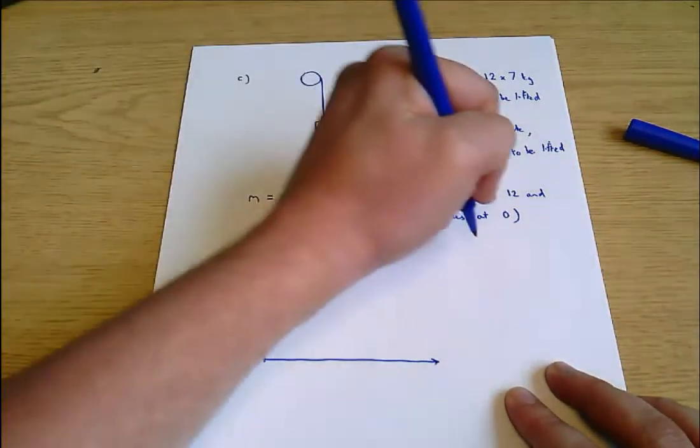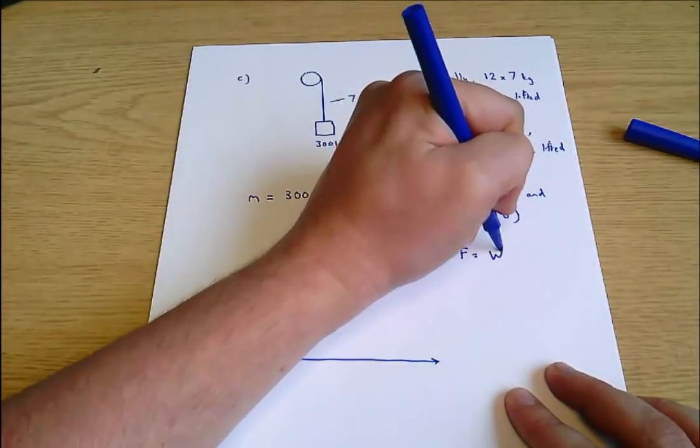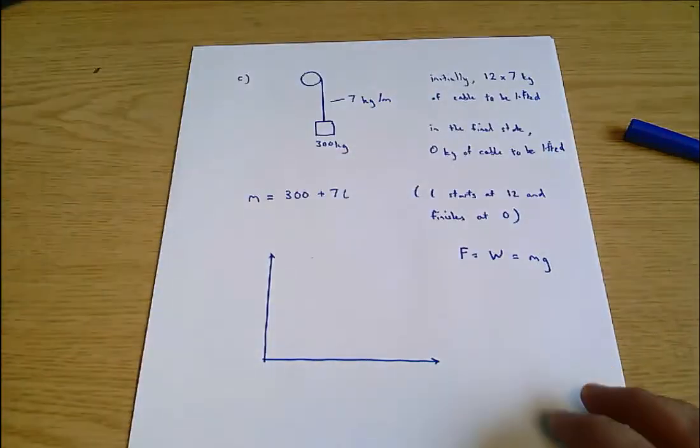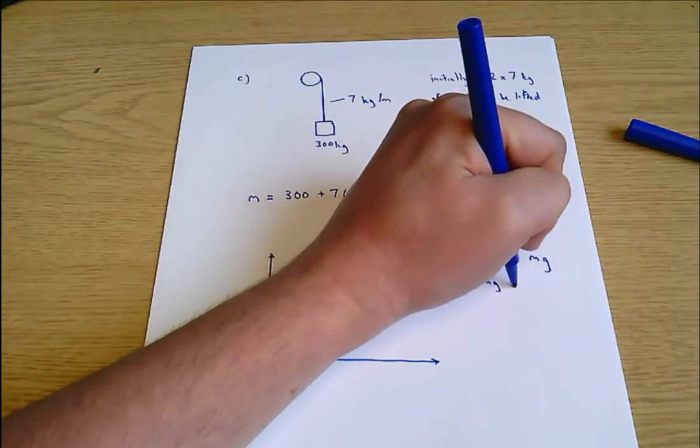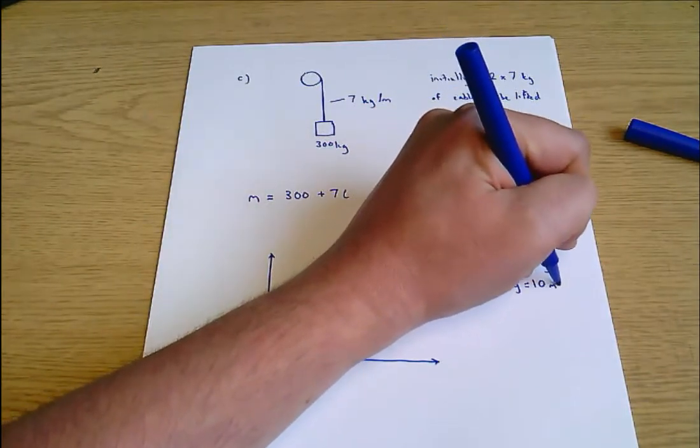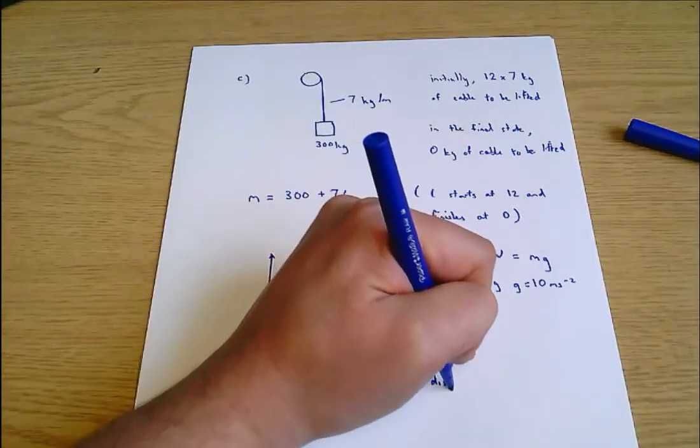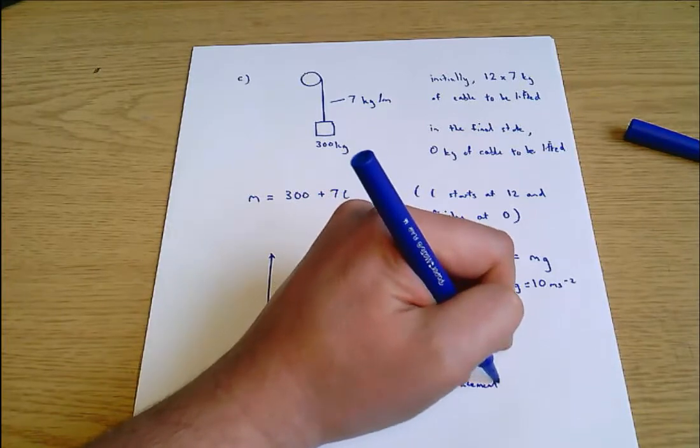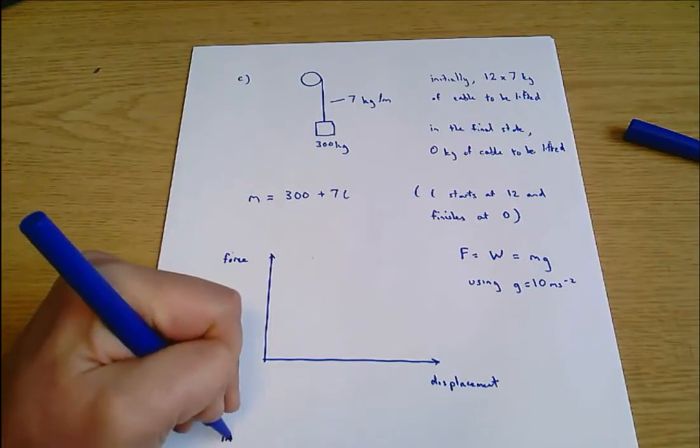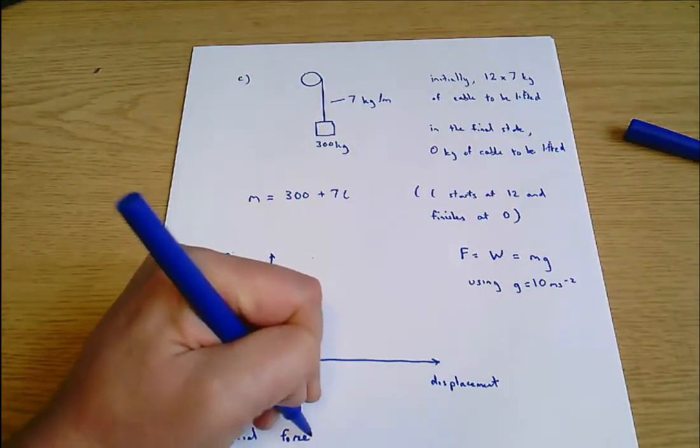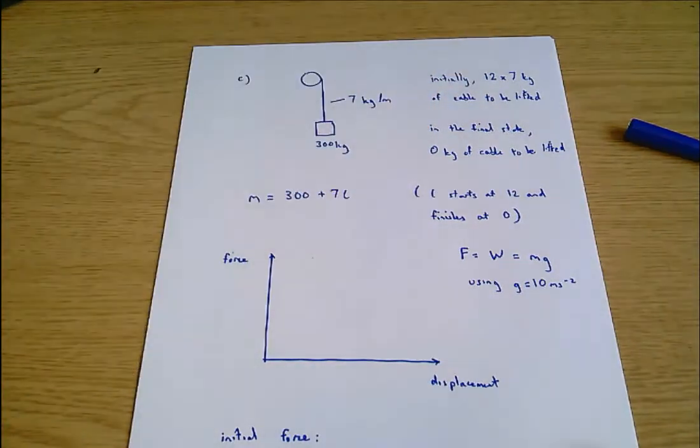Worth making a side note here. We're interested in force. Force in this problem is all about weight, which equals mass times gravity, and we're using g equals 10 meters per second per second. So a graph of force against displacement. This is displacement and this is force. The initial force - at that stage we're lifting the weight and we're lifting this 12 times 7 kilograms of cable.